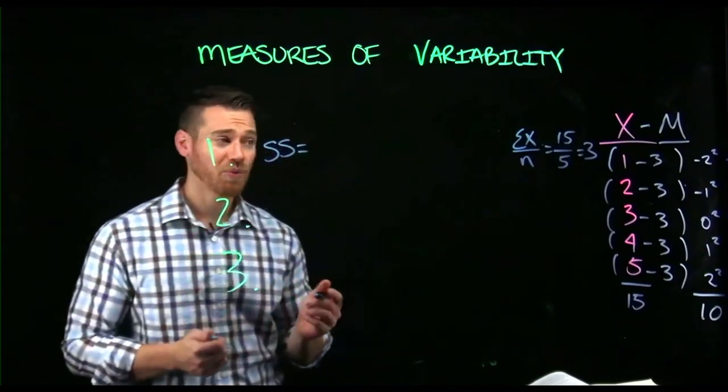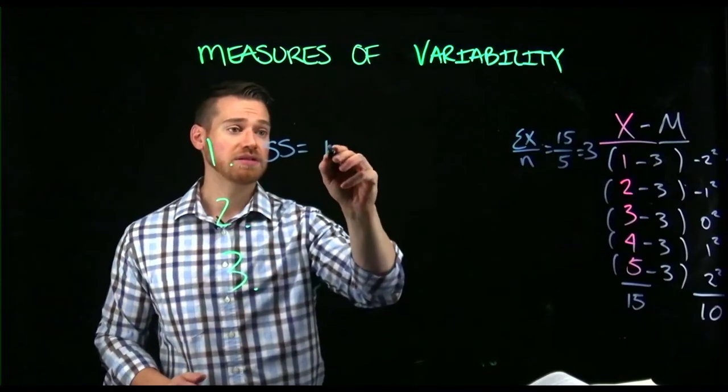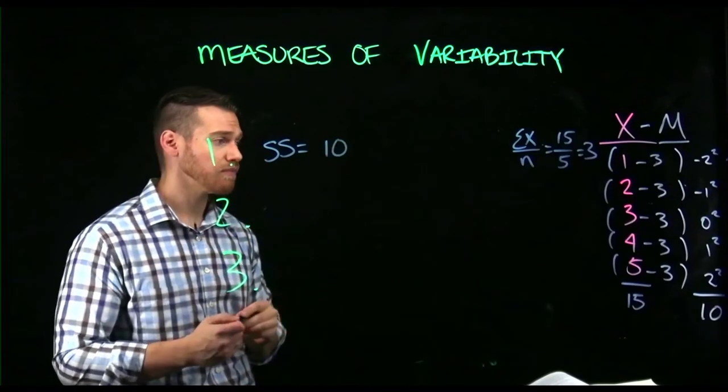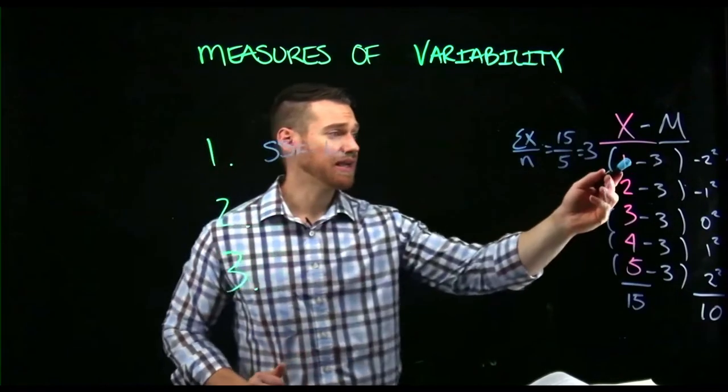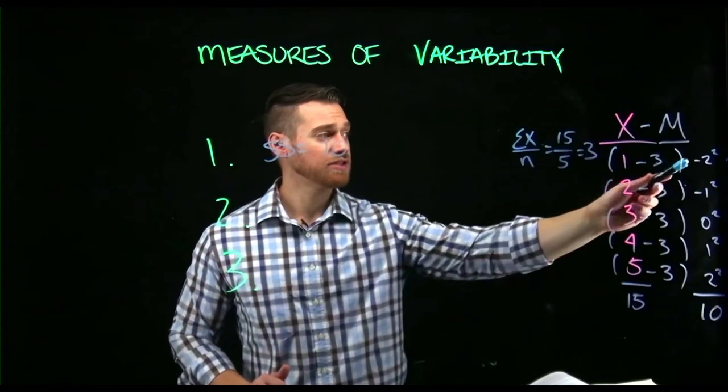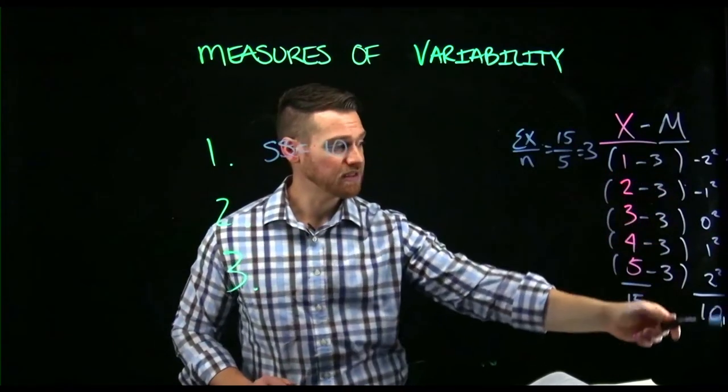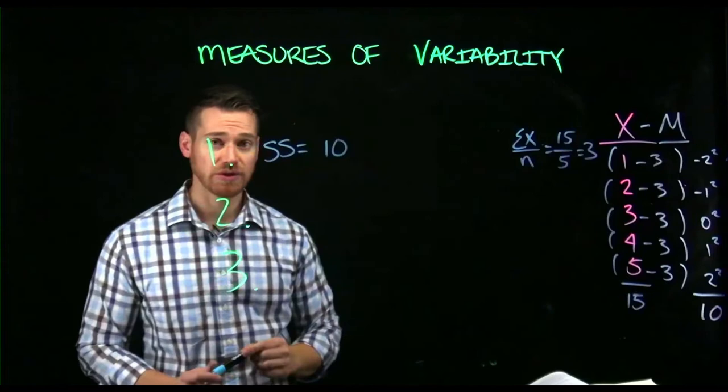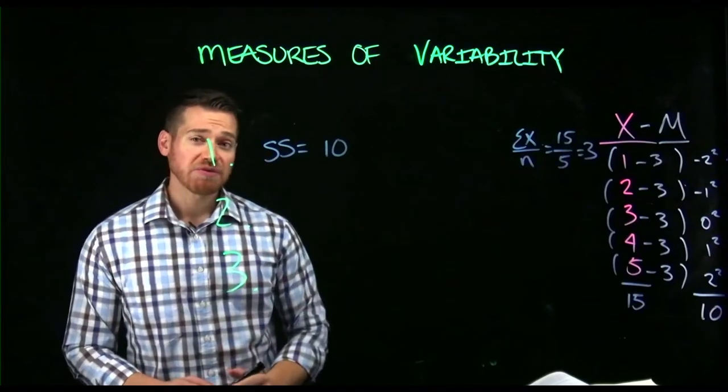So we have now gotten 10 is our sum of squared deviations. So our sum of squares here equals 10. And again, we did that by getting the difference between the score and the mean, squaring that value, and then we sum all of those. We add all those together. So sum of squares here is 10.